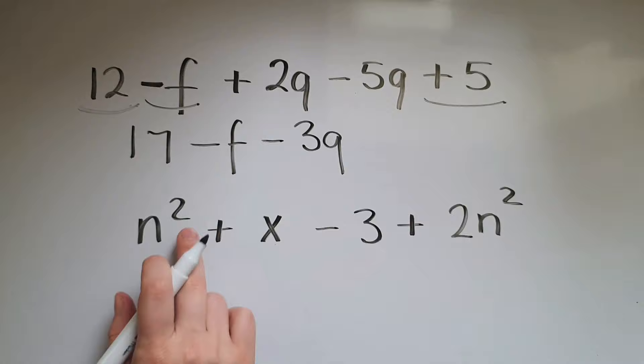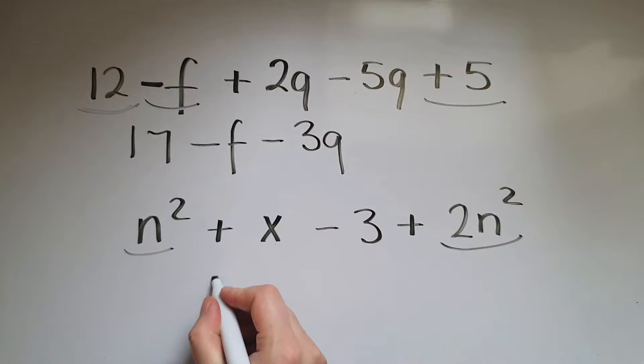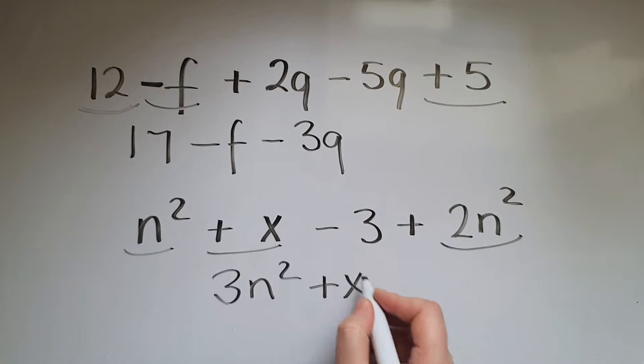Now we've got n squared, add x, take away three, add two n squared. So n squared, and we've got two n squared in here, so all together that is three lots of n squared. We've got the x here, we haven't got any more, so plus x, minus three.